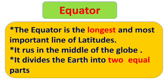Now, what is the equator? The equator is the longest and most important line of latitude. It runs in the middle of the globe and divides the earth into two equal parts — the northern hemisphere and the southern hemisphere.